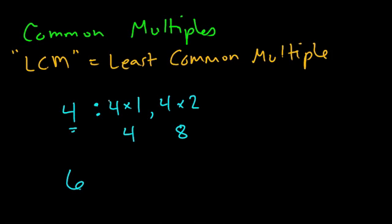Notice we don't start at 4 times 0 or 4 times a negative value. Multiples typically refer to counting numbers, like 1, 2, and 3, and so forth, times the number you're looking at. So the first multiple is your number times 1, and then times 2, and times 3, and so forth.